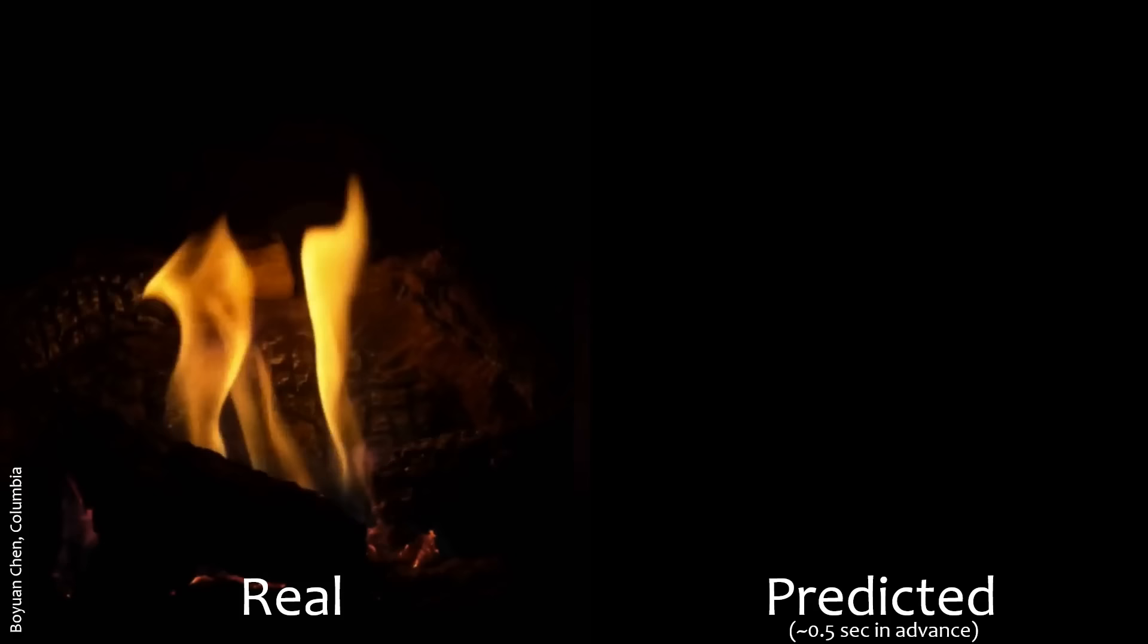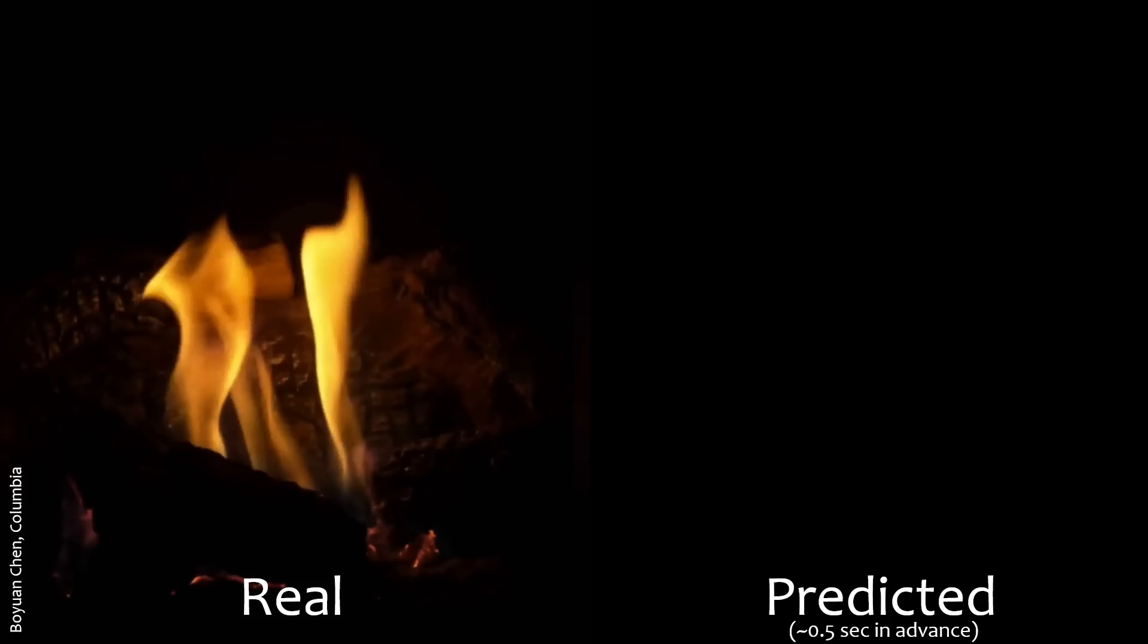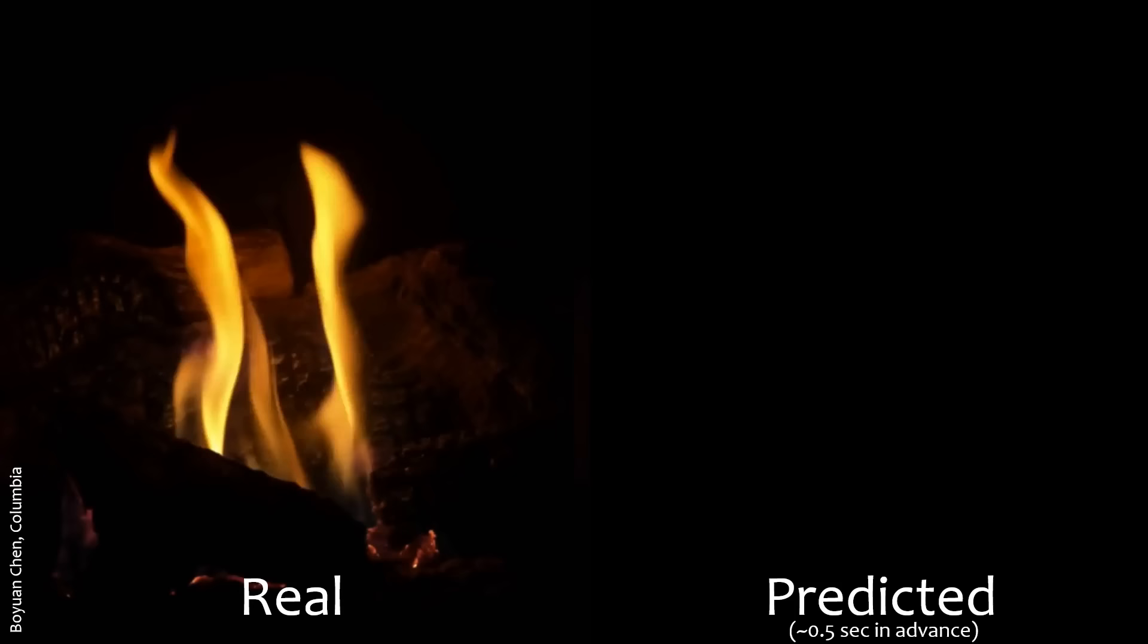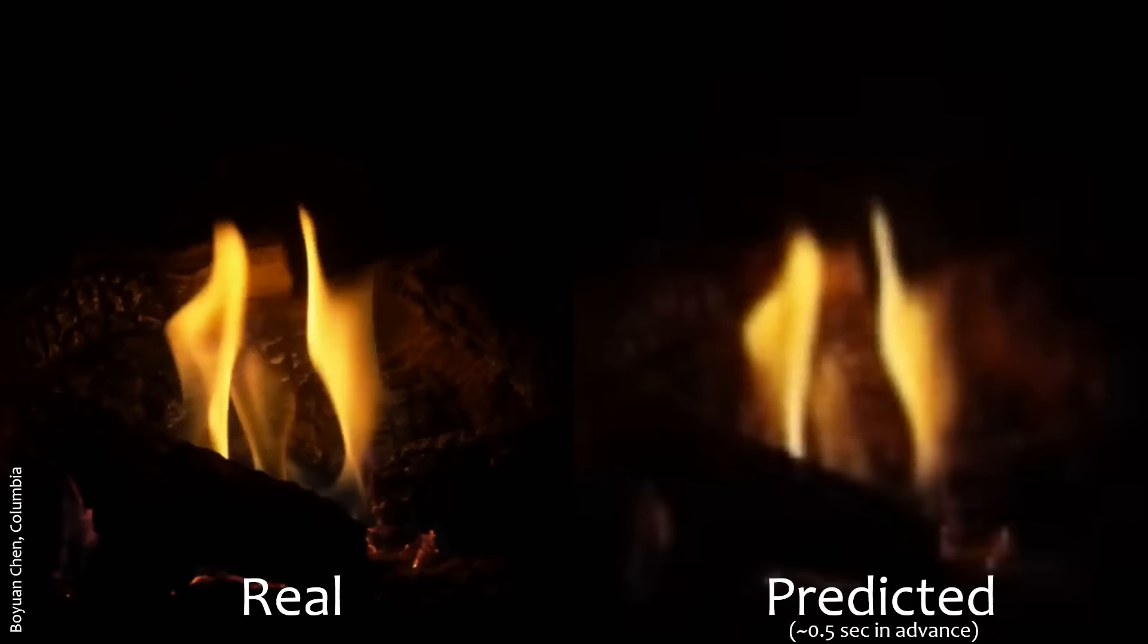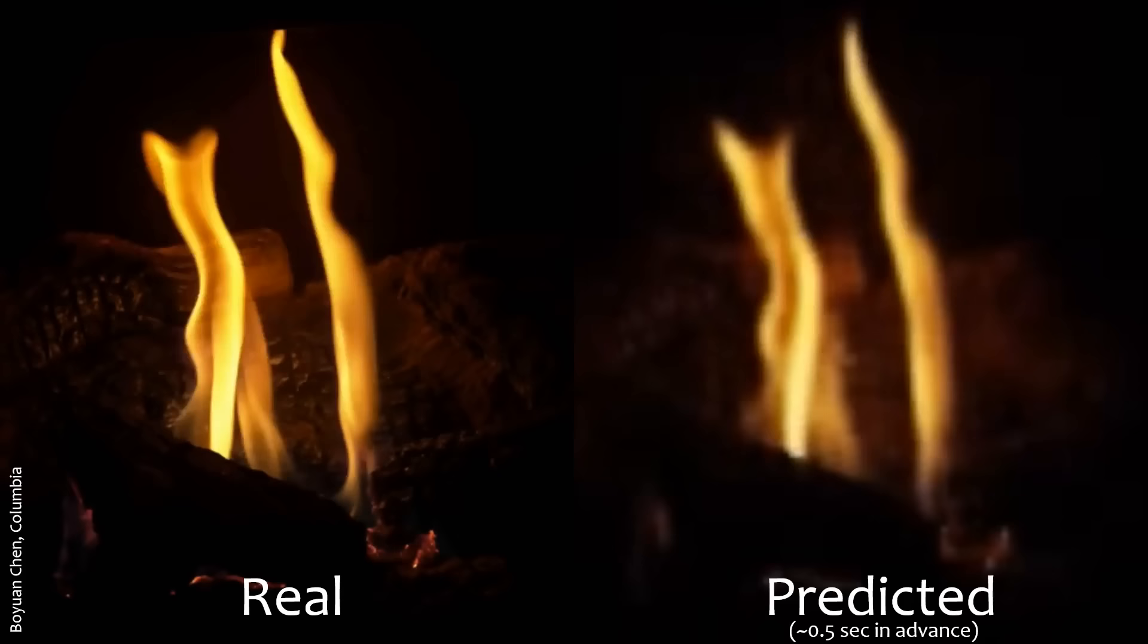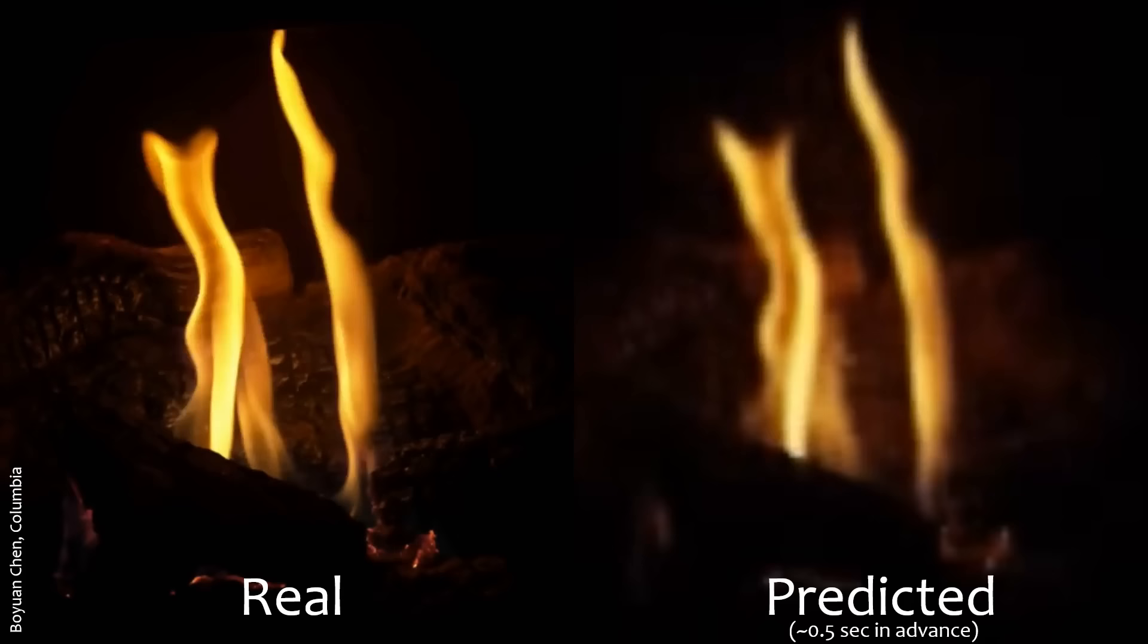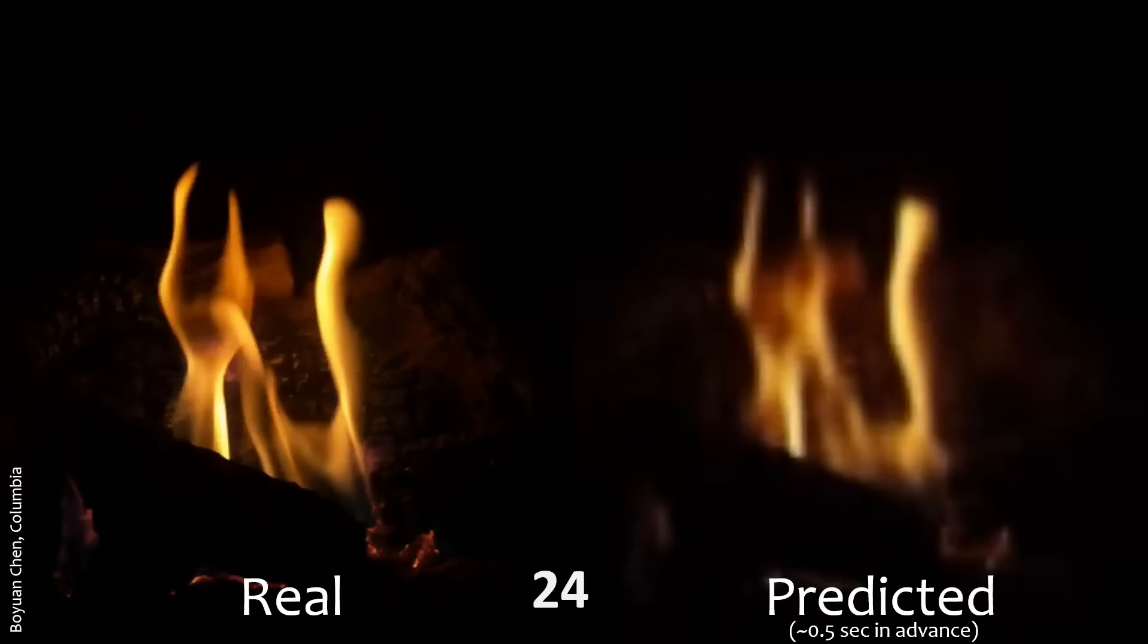What happens if we take a dynamical system for which we don't know the answer? Here's an example of a loop of fire in the fireplace. We have the system examine it for a long time, make its predictions. The predictions are only a means to extract the variables. It's quite amazing that you can predict what the fire is going to do about half a second in advance. When we look at how far we can squeeze it, the answer is 24. There are about 24 state variables needed to describe the dynamics of this fire.